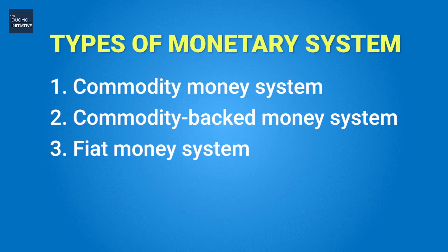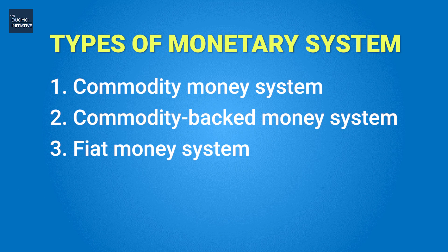There are three main types of monetary system that have been used throughout the world: a commodity money system, the commodity backed money system, and a fiat money system. Ultimately these systems should all be providing a unit of money that fulfills the functions of money — a medium of exchange, a store of value, and a unit of account. So we'll start with the simplest system, which is the commodity money system.